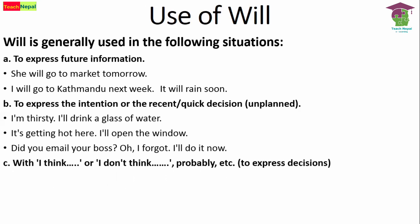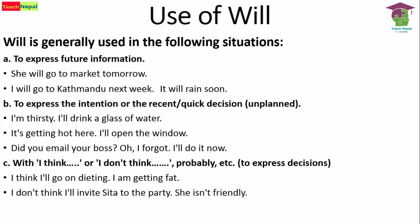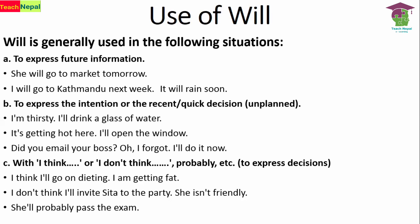The third use is with phrases like 'I think,' 'I don't think,' 'maybe,' 'perhaps,' 'probably.' With these expressions we use 'will' to express decisions. For example: 'I think I'll go on dieting, I'm getting fat.' 'I don't think I'll invite Sita to the party.' 'She will probably pass the exam.' So with 'I think / I don't think / probably / perhaps / maybe,' we use 'will.'